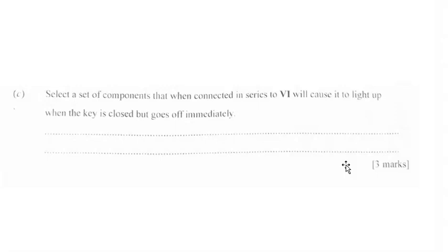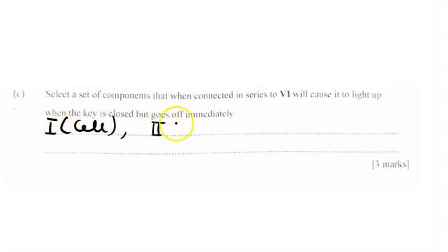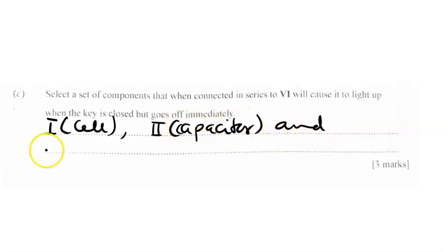Let's move to part C. We have to select a set of components that when connected in series to VI — which is the LED or light emitting diode — will cause it to light up when the key is closed, but goes off immediately. The components are: component I, which represents cells; component II, which represents a capacitor; and then component III.